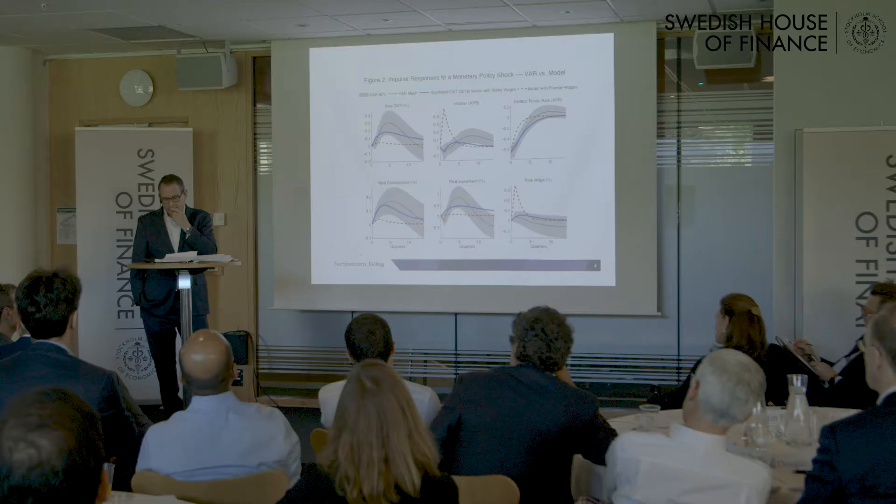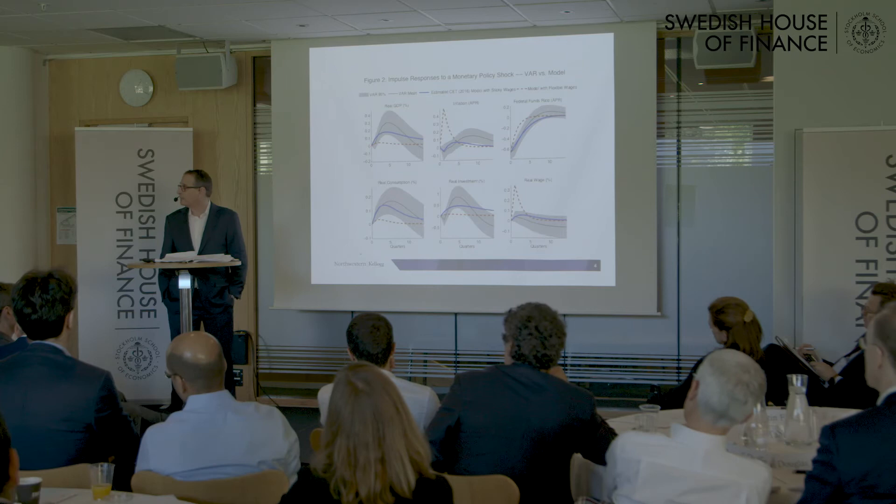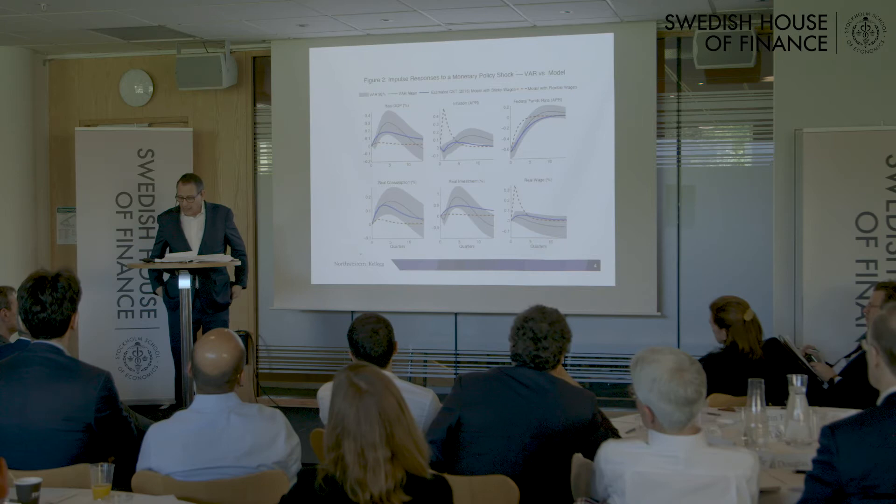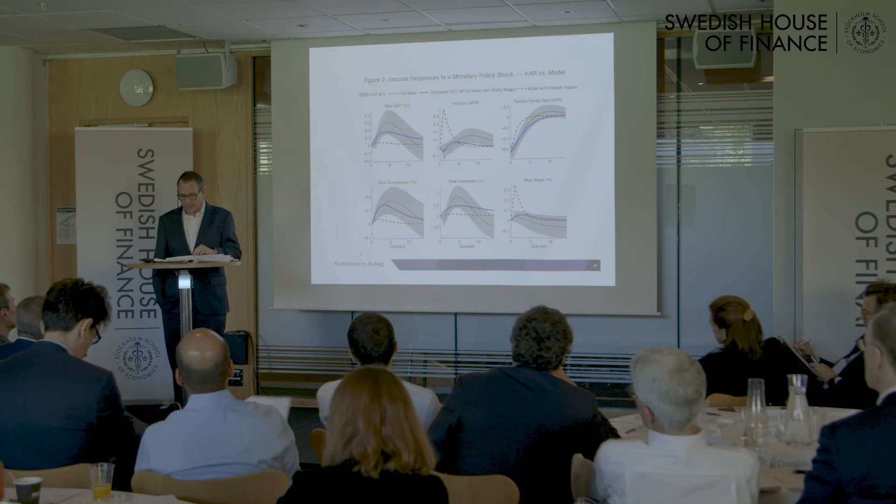Let me now turn to the elephant in the room and acknowledge that DSGE models, like their reduced-form econometric competitors, failed to signal the increasing vulnerability of the U.S. economy to a financial crisis. I think that failure reflects a broader failure in the economics and regulatory community: we had this morphing shadow banking sector whose full significance we didn't appreciate, and we had a rollover crisis.